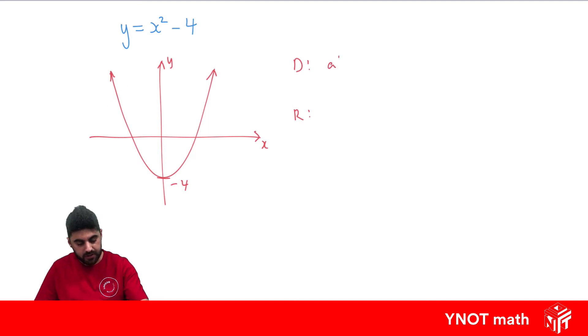For our range we test with horizontal lines. It can cut the graph here, here, everywhere, but once we get below minus 4 we don't have any values. So we write our range: y has to be greater than or equal to minus 4.